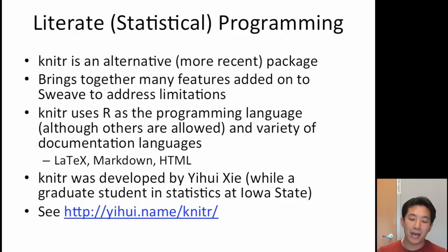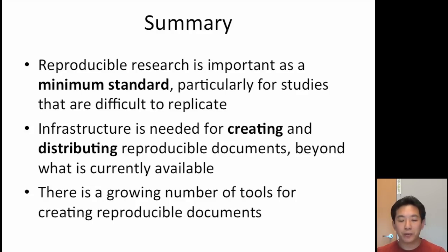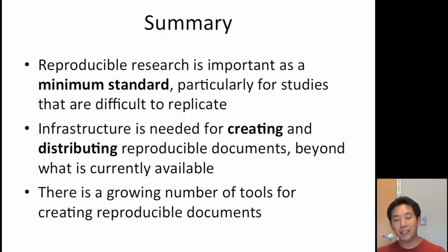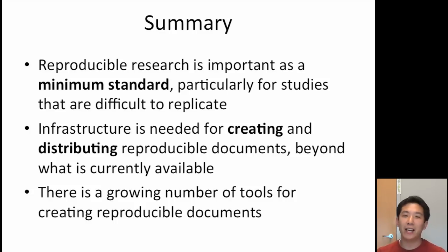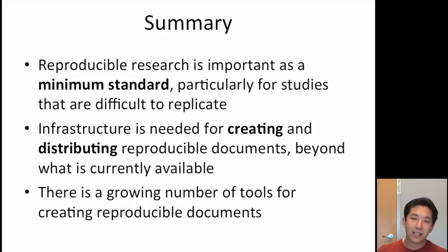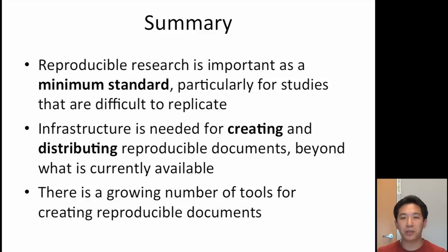To summarize briefly, reproducible research is an important minimum standard for computationally intensive types of analyses where replication is very difficult or impossible. We still need quite a bit of infrastructure and tools to create and distribute reproducible documents beyond what is currently available, but that's improving every day and there are lots of new tools coming on the scene. In the next lecture, I'll talk about some of these tools — in particular, I'll talk about Knitr and show how you can produce reproducible documents.